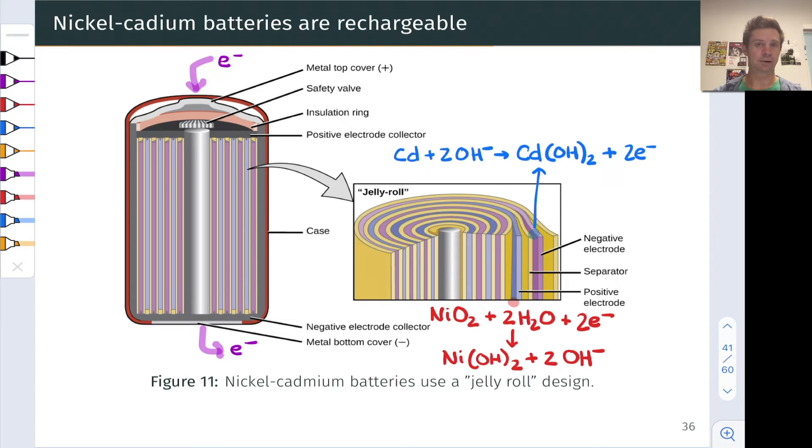To recharge this battery, we would run the redox reactions in reverse. The cathode would become the anode and the anode the cathode, if you will, with reduction of Cd(OH)2 to Cd taking place and oxidation of Ni(OH)2 to NiO2 occurring. But under discharge conditions, electrons will leave the anode at the bottom and come in the cathode at the top here in this drawing.